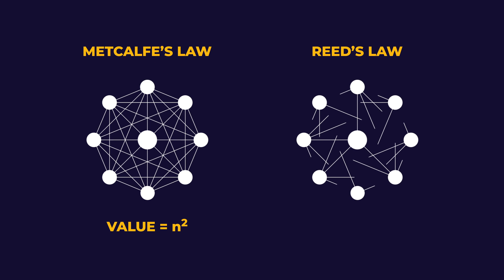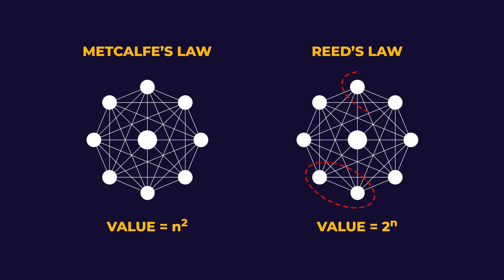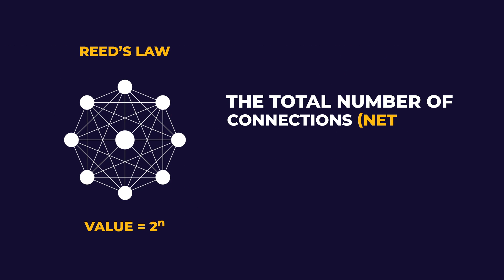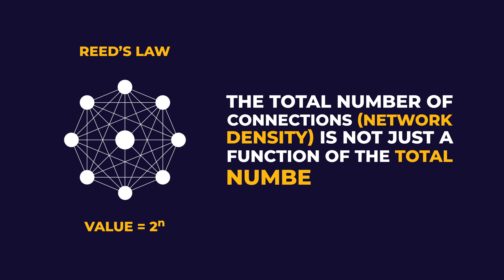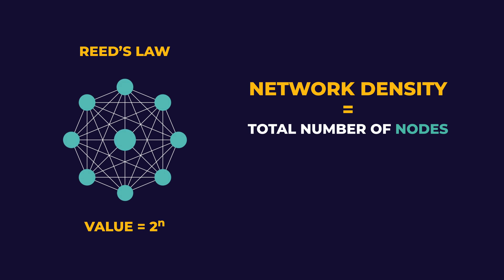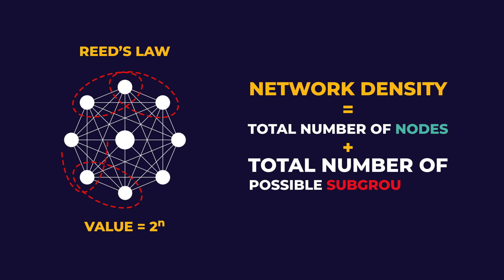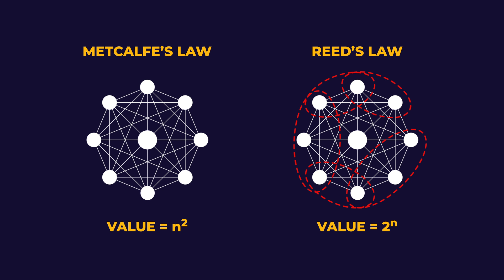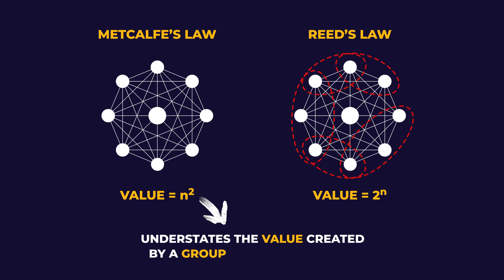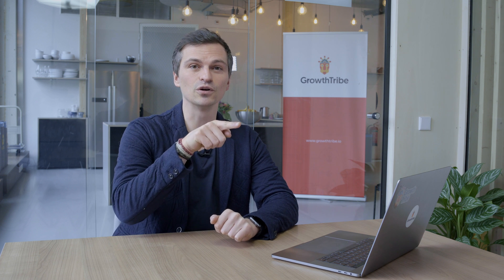This brings us to Reed's Law, which is even more ambitious. Reed says that group-forming networks increase in value at a rate of 2^n, where n is the total number of nodes on the network. The reason Reed suggested 2^n instead of n^2 is because the number of possible groups within a network is much higher than 1 — network density is a function of total nodes plus total possible subgroupings or clusters. Reed's Law believes that even Metcalfe's Law understates the value created by a group-forming network. We're not looking at linear growth or even simple exponential growth — we're looking at exponential growth on steroids. Note these are math concepts describing network relationships, not scientifically proven laws like gravity.